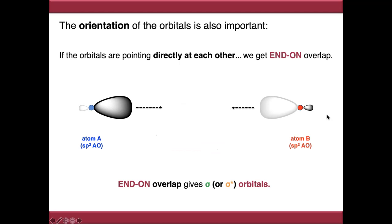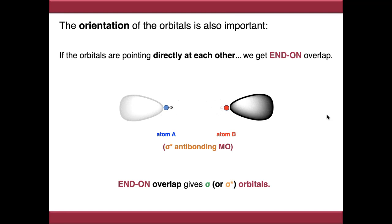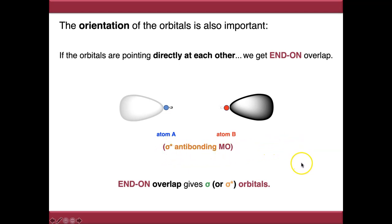What happens if we have destructive end-on overlap? If we bring these two atoms together, the orbitals cancel each other out - they don't want to get near each other. We end up with a sigma anti-bonding molecular orbital, denoted with a star. Any anti-bonding orbital has a star designation. So constructive end-on overlap gives us sigma bonding, and destructive end-on overlap gives us sigma star anti-bonding.